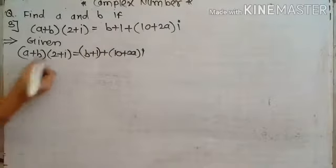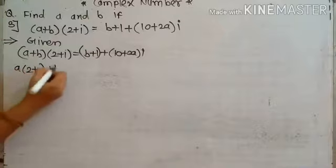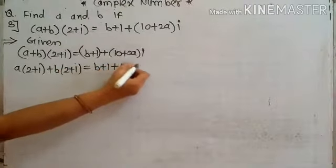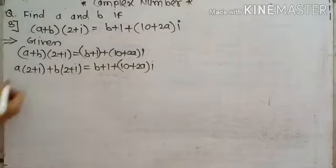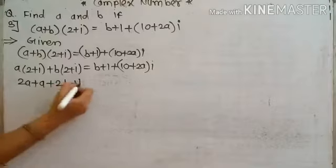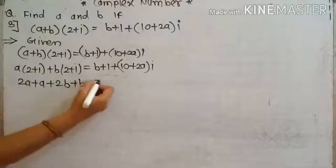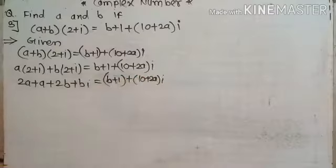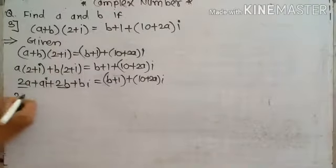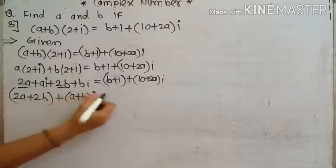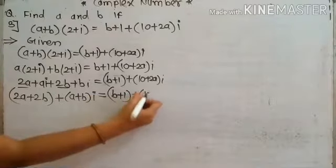Expanding: a into 2 plus i plus b into 2 plus i is equal to b plus 1 plus 10 plus 2a into i. This gives 2a plus ai plus 2b plus bi is equal to b plus 1 plus 10 plus 2a times i. Grouping: real part 2a plus 2b and imaginary part a plus b, into i, is equal to b plus 1 plus 10 plus 2a times i.